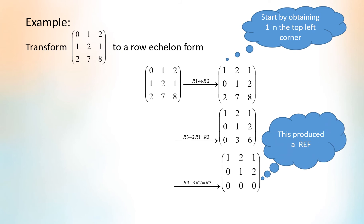This produces a row echelon form since it meets the following requirements: the first non-zero entry in each row is 1; the first non-zero entry is to the right of the first non-zero entry in the previous row; and rows made up entirely of zeros are at the bottom of the matrix.